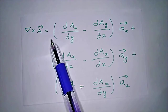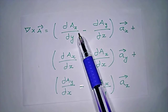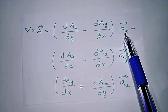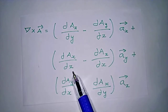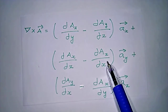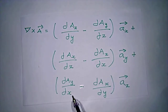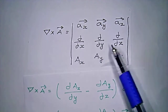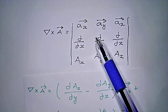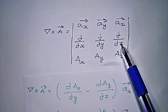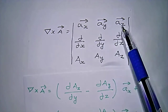Expanding the determinant: del cross A = (∂Az/∂y − ∂Ay/∂z) x-hat + (∂Ax/∂z − ∂Az/∂x) y-hat + (∂Ay/∂x − ∂Ax/∂z) z-hat. Expanding using the x-component: (∂/∂y)(Az) − (∂/∂z)(Ay).